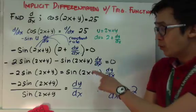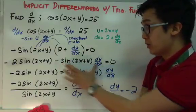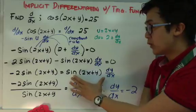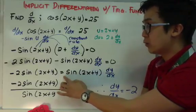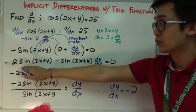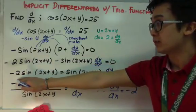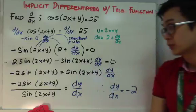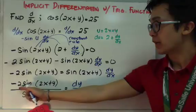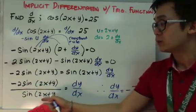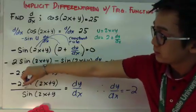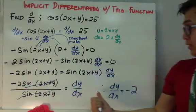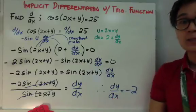Now we're ready to isolate dy/dx. I add sine(2x+y)·dy/dx to both sides to get rid of the negative. So sine(2x+y)·dy/dx equals negative 2·sine(2x+y). Dividing both sides by sine(2x+y), we get dy/dx = negative 2·sine(2x+y) all over sine(2x+y). We can cancel those terms, leaving us with negative 2. Therefore, the derivative of the function in terms of x is simply negative 2.